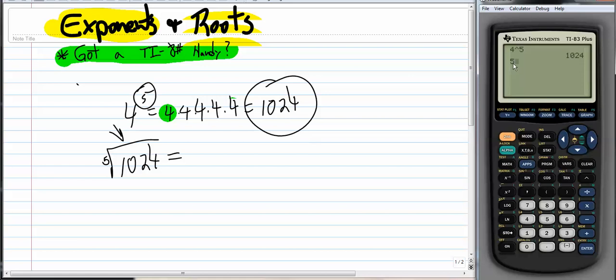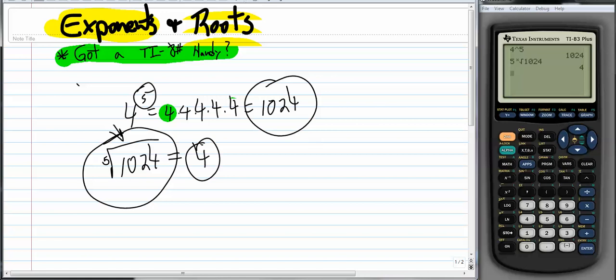So I hit 5, then I hit the math button. And then I go down to this one right here. Hit enter. So I'm going to take the 5th root of 1,024. And I'm going to get 4. So the 5th root of 1,024 is 4. Why? Because 4 times itself 5 times is 1,024.